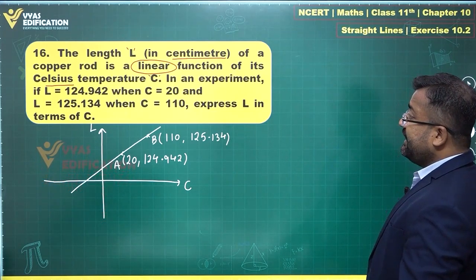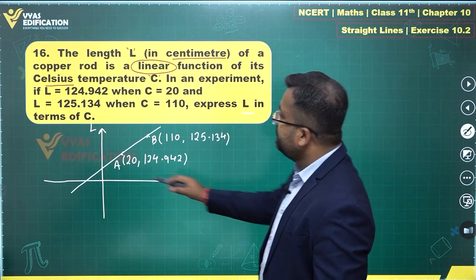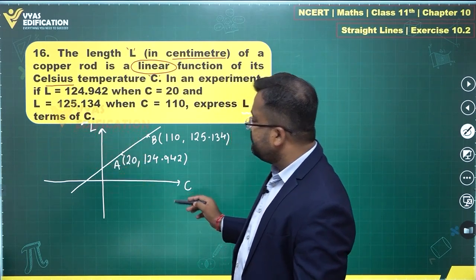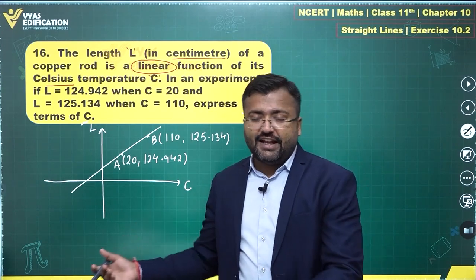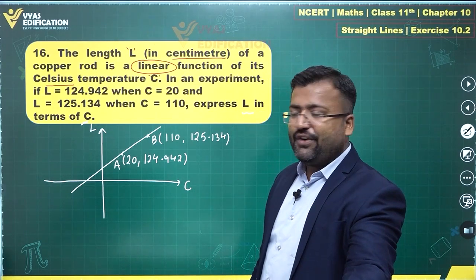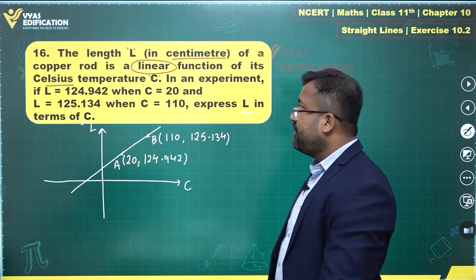We can easily solve and get L in terms of C. Basically, Y in terms of X is what we are interested in. We are interested in the equation of this line. You know how to find that. This is two-point form. Let's apply concepts.